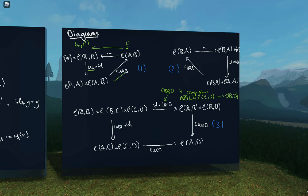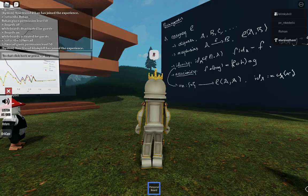Now we'll move on to define a two-category, on our path to defining bicategories. A two-category is, roughly speaking, a category in which we also have higher-order morphisms between the morphisms of objects, and everything works accordingly.